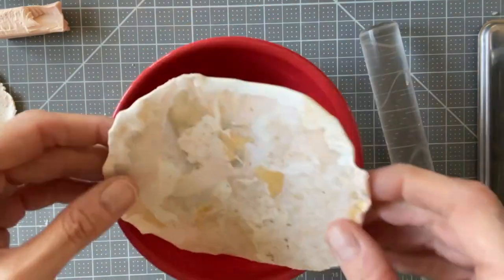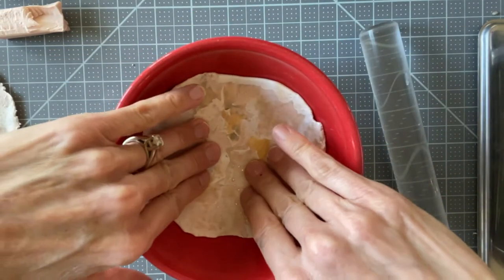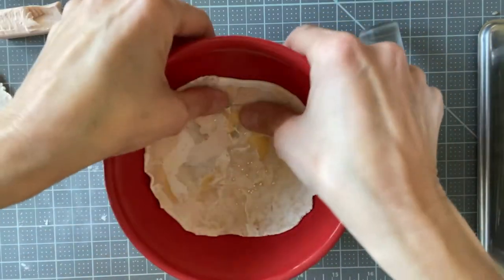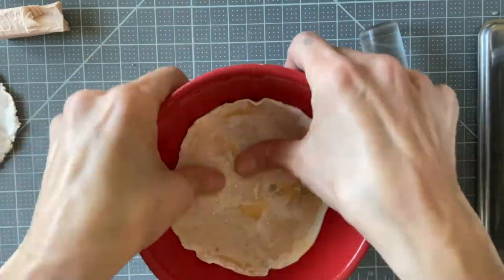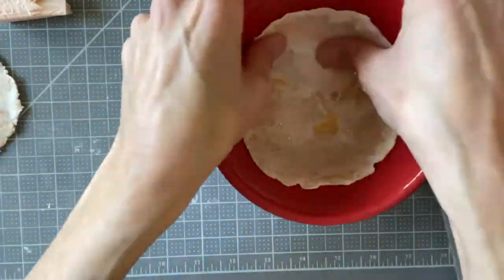To form into bowls choose oven safe bowls. You can use the outside of a pyrex measuring cup, the inside of a ceramic bowl or even glass measuring cups. Press down all around the edges and the bottom so there are no air bubbles.